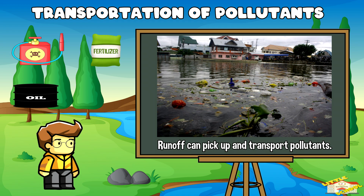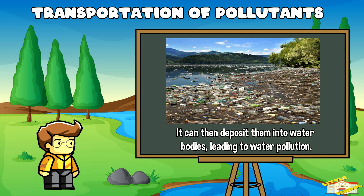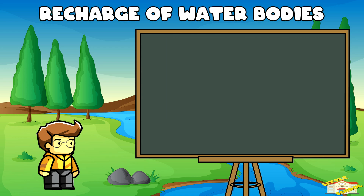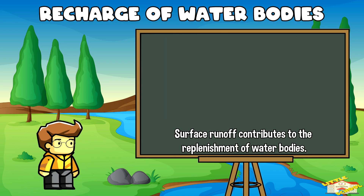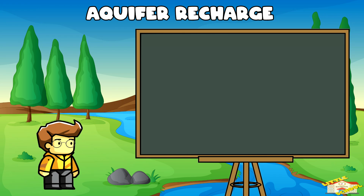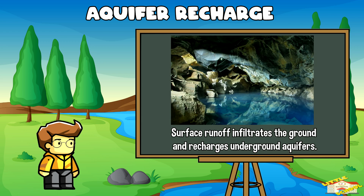Runoff can deposit pollutants into water bodies, leading to water pollution. Surface runoff also contributes to the replenishment of lakes, rivers, and reservoirs. In some cases, surface runoff infiltrates the ground and recharges underground aquifers.